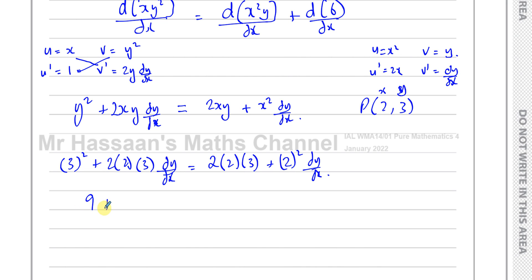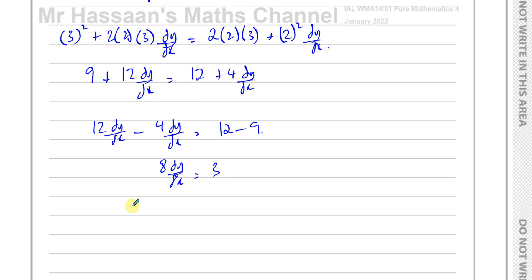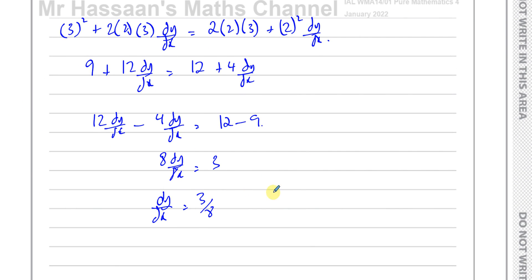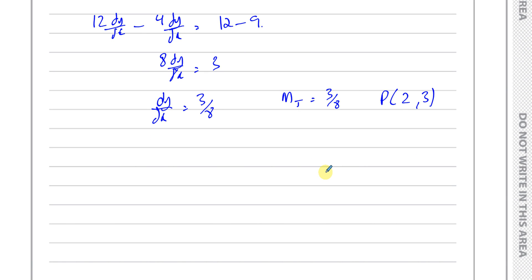The equation of the tangent has the same gradient as the curve at that point, whereas the gradient of the normal is perpendicular to that. If it was a normal, we would find the negative reciprocal. But the tangent has gradient 3/8. So using y minus y1 equals m times (x minus x1), we have y minus 3 equals (3/8)(x minus 2). To write it in the form ax plus by plus c equals 0 with integers, multiply both sides by 8: 8y minus 24 equals 3x minus 6.